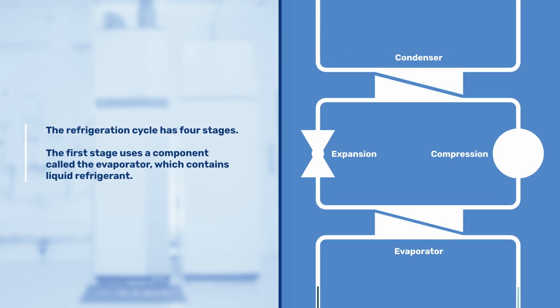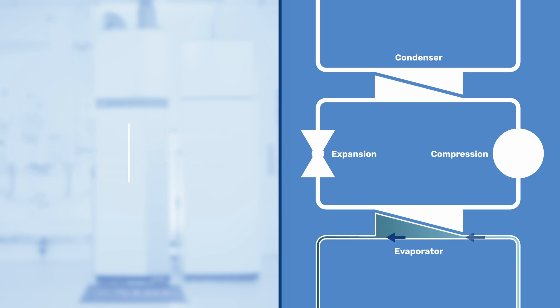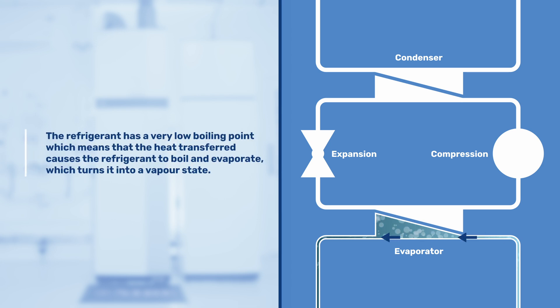The first stage uses a component called the evaporator which contains liquid refrigerant. The refrigerant in the evaporator is colder than the ambient air. The refrigerant has a very low boiling point, which means that the heat transferred causes the refrigerant to boil and evaporate, which turns it into a vapor state.